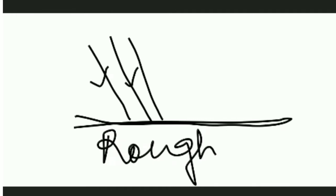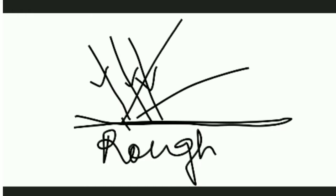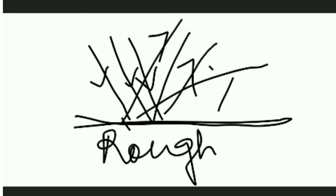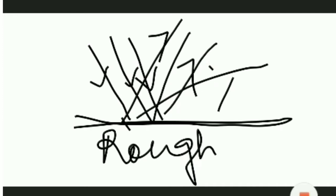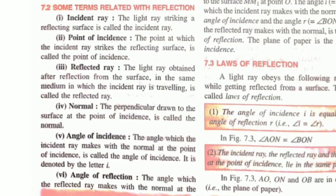Now let's talk about irregular reflection. The key word here is rough surface. When light rays come, they reflect irregularly — that is called irregular reflection. The key word is rough surface, and the reflected light rays are unparallel. Diffused light is obtained by reflection from rough surfaces, and it enables us to see the objects around us.